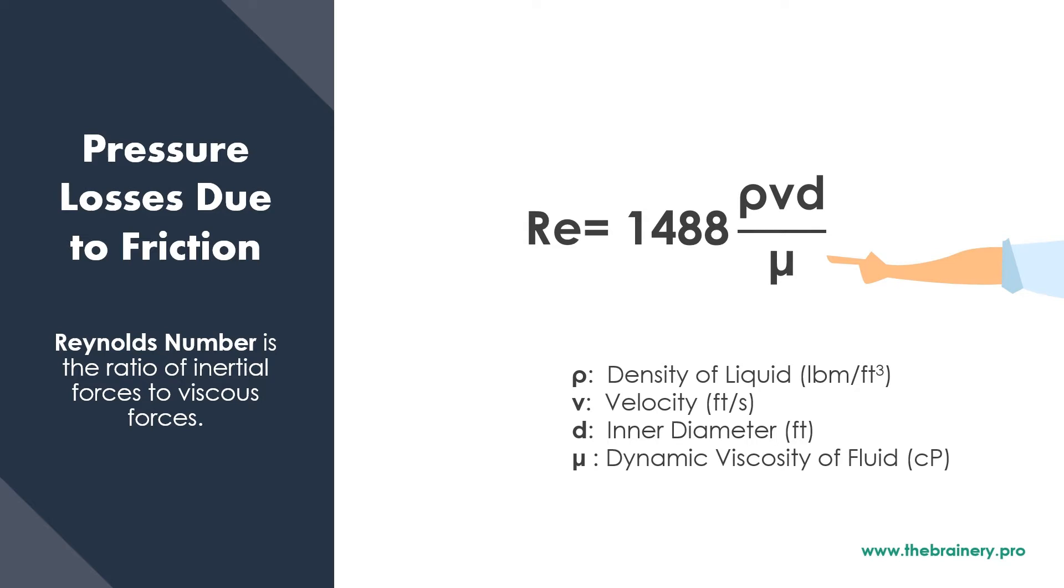So looking at this equation right here, when you have high viscosity of liquid, the Reynolds number will be lower. And therefore it moves towards being more laminar.